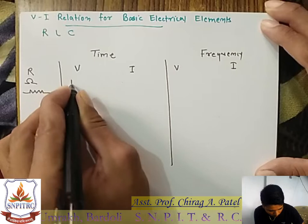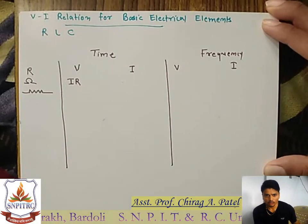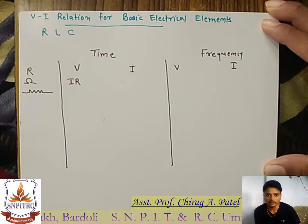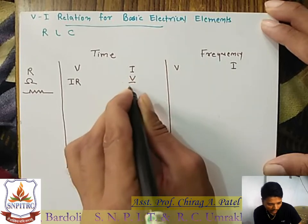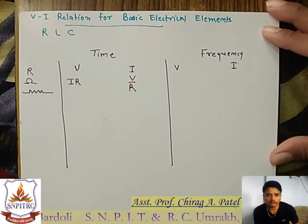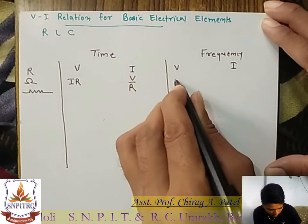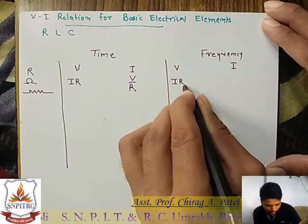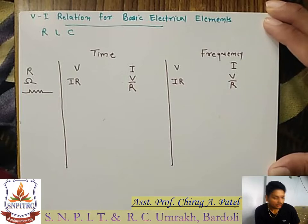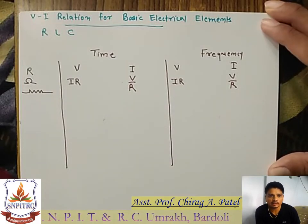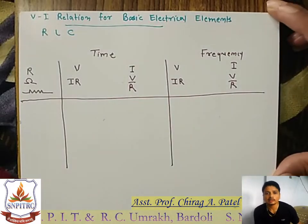The voltage across resistance: V is equal to I into R. This will be the first equation — all have to remember this. The current through resistance is I equal to V by R. For the frequency domain, the resistance equations are the same: V is equal to IR and I is equal to V by R. So this is the voltage and current relationship for the resistance — the first element.